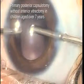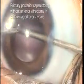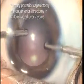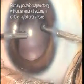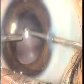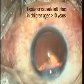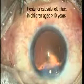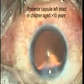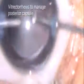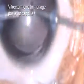Primary posterior capsulotomy without anterior vitrectomy is performed for children above 7 years of age, and the posterior capsule is left intact in children above 9 to 10 years of age. The size of the primary posterior capsulotomy must be 1 mm less than the size of the optic of the intraocular lens.